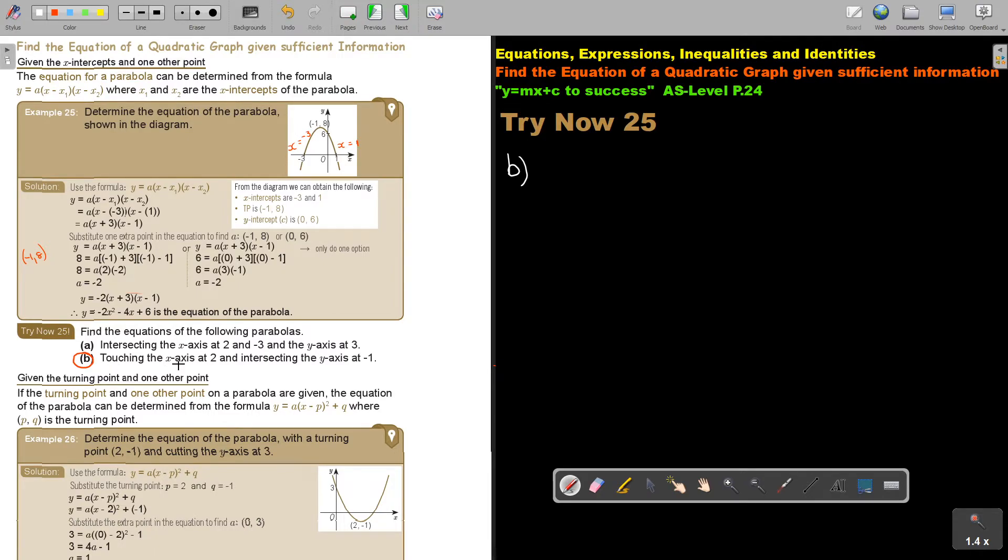So touch the X axis at 2. Oh, this is very important. So touch, and so X intercept. And that's going to be 2 and 0. And intersects the Y axis, Y intercept. And I must just point this out: 0 and negative 1.